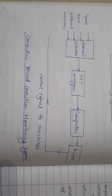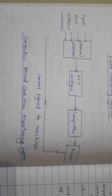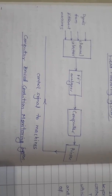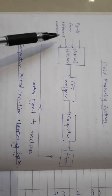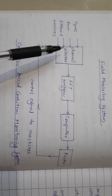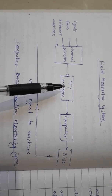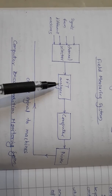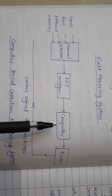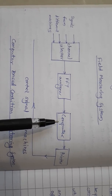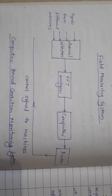The computer-based condition monitoring system can monitor the condition of many machines simultaneously. As shown in the figure, signals from different machines go to a channel selector. The channel selector gives the data or signal to the FFT analyzer. The FFT analyzer analyzes the condition of the machine and sends the signal to the computer. The computer plots the graph of the condition of the machine on the printer, and the control signal is sent back to the machine.